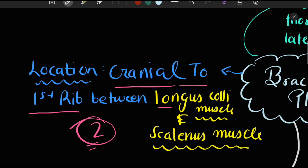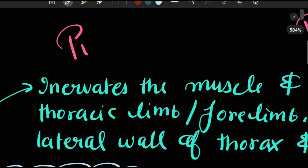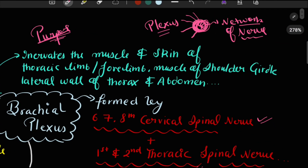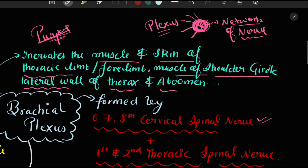The brachial plexus is present in between two muscles — the longus colli and the scalenus muscle. The purpose of the brachial plexus is to innervate the muscles and the skin of the thoracic limb (the forelimb), enabling voluntary walking, as well as supplying the shoulder girdle, and the lateral wall of the thorax and abdomen.